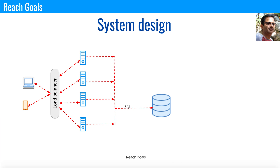Now let's go into the important topic: how to design or set up an alerting system on your own. If you have deployed your application in AWS, you have a straightforward tool like CloudWatch where you can configure everything. But here the question is you are going to design or set up a system on your own, without utilizing any directly available cloud monitoring tools.